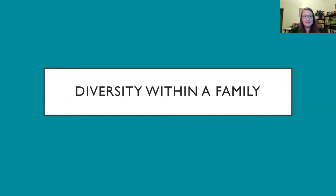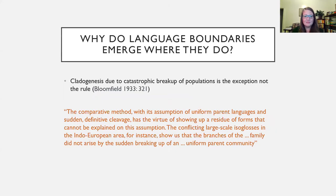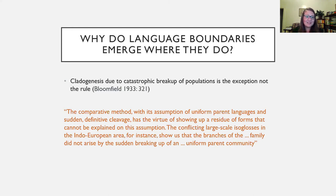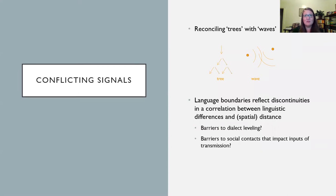The first thing I'm going to talk about is language diversity within a family. As Bloomfield pointed out in his classic work Language, we don't think of language diversification as something that happens to large uniform speaker communities that catastrophically break apart — that is the exception, not the rule. We expect there are not sudden cleavages between speaker groups. We have to understand this as something that develops out of more continuous variation across speaker groups that are non-uniform. This means we have to reconcile some conflicting signals: we think about language families as tree-like structures.